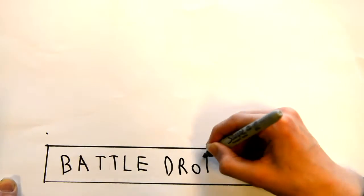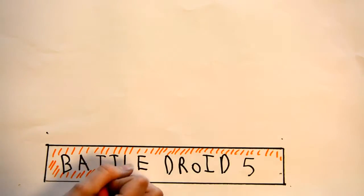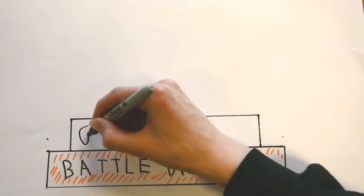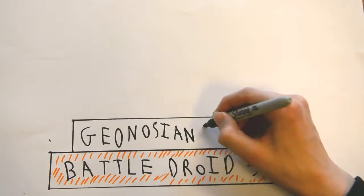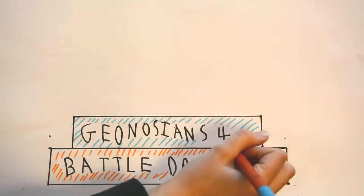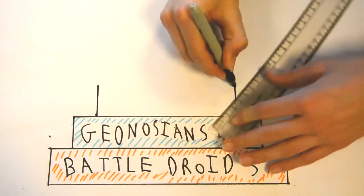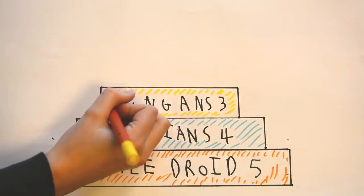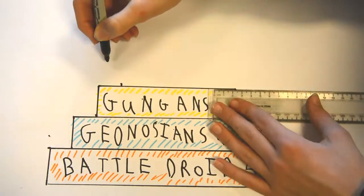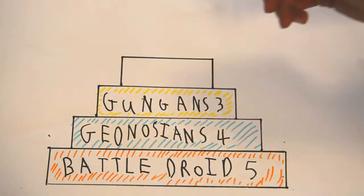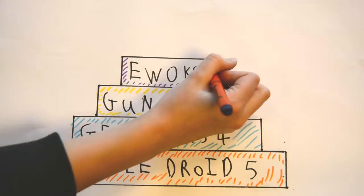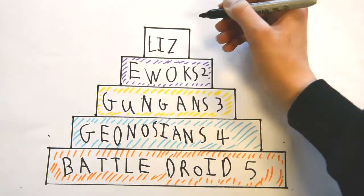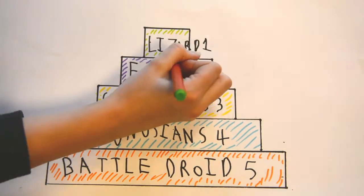Five battle droids there are — on the bottom this goes. Four Geonotions there are, so smaller the bar gets. Three Gungans there are, so even smaller the bar gets. Only two Ewoks there are, so the bar gets very small. One lizard there is — the smallest bar, on top it goes.